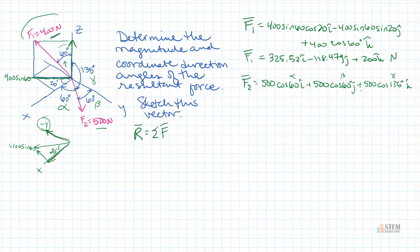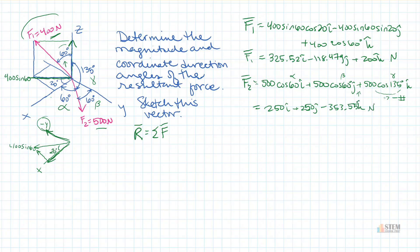Notice I put a plus sign here — even though the force is in the negative z direction, cosine 135 gives you a negative number. We wouldn't want to put a negative sign here because then we'd get a double negative giving a positive. So every time you use alpha, beta, or gamma, you always put the positive sign out front. Simplifying, we get 250i plus 250j minus 353.55k newtons.